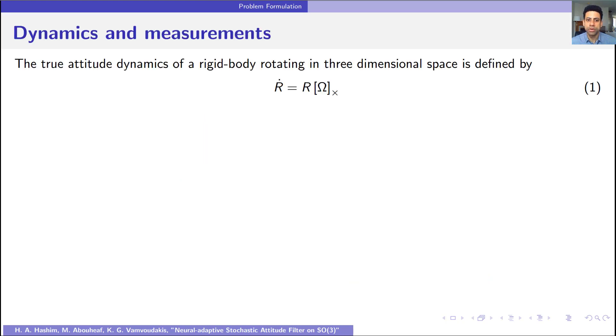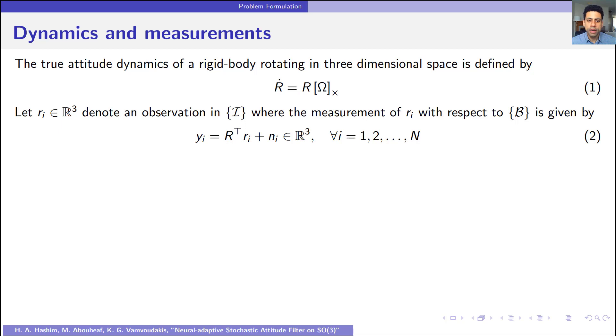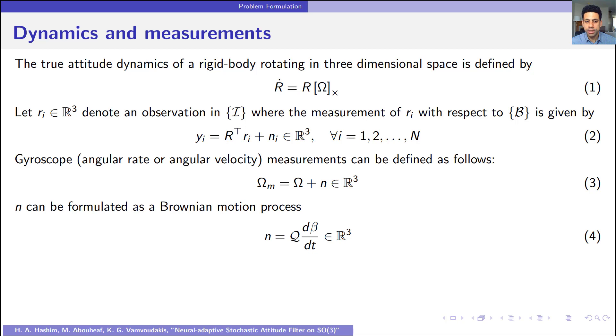The true attitude dynamics of a rigid body rotating in three-dimensional space is defined as R dot equal R skew symmetric of omega, where R is the orientation of the rigid body and omega is the angular velocity or true angular velocity. Define R I as an observation in the inertial frame, where the measurement of R I with respect to the body frame is given as Y I equal R transpose R I plus a noise. For gyroscope or angular velocity measurements, it can be defined as omega M equal to the true angular velocity omega plus noise. Here N denotes white noise, and N can be formulated as a Brownian motion process, which is N equal Q multiplied by D beta by DT.